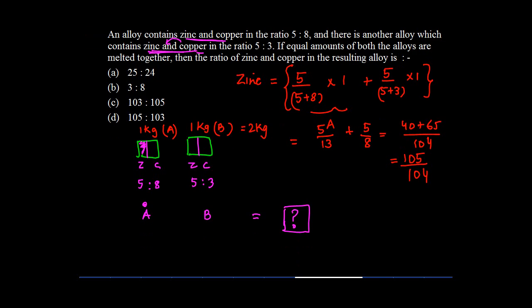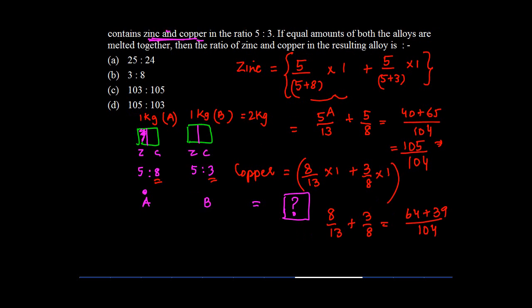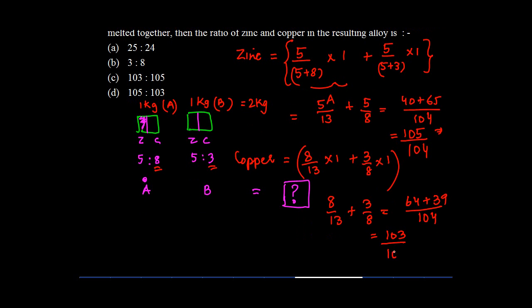Similarly, if you look for copper, although you can get some bit of a clue from here that 105 is zinc, copper will be how much? It will be 8 by 13 into 1 plus 3 by 8 into 1, so 8 upon 13 plus 3 upon 8. Again the LCM is 104. 8 times 8 is 64 plus 3 times 13 is 39, so 103 upon 104.